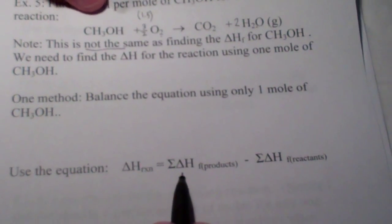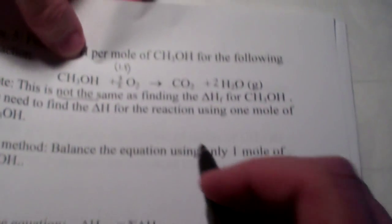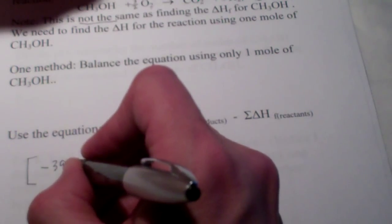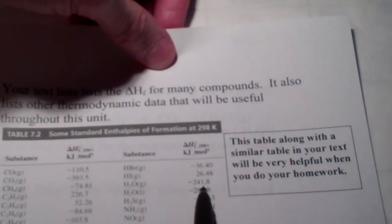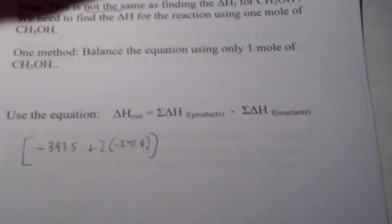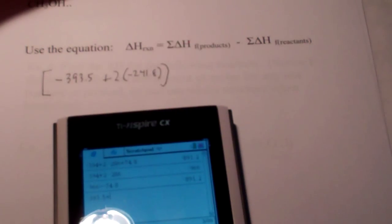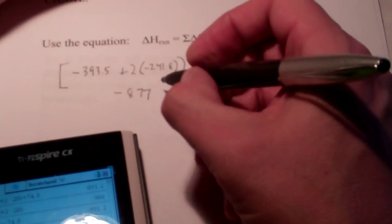Let's use the easier version of Hess's Law: take the heat of formation of products, add them together, and subtract the heat of formation of reactants. My products: 1 CO2 with heat of formation negative 393.5, plus 2 water vapors — water gas this time is negative 241.8 each, so we double that. So: negative 393.5 plus 2 times negative 241.8. This side totals negative 877.1.